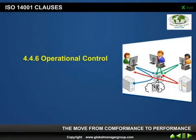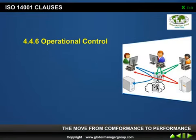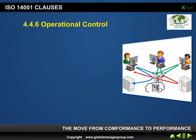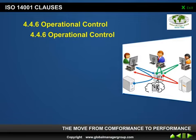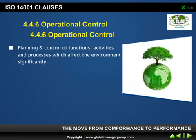We are discussing 4.4.6 Operational Control. Under operational control, you have to make a documented procedure, and in this procedure, cover the following things. First, Planning and Control of Functions — the activities or processes which affect your environment significantly — establish the controls for them and document such things.